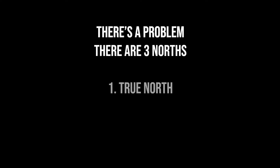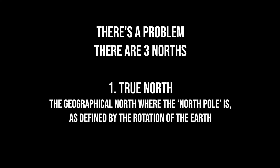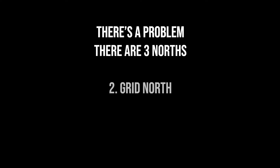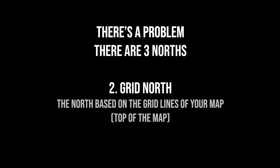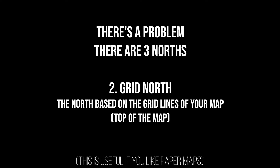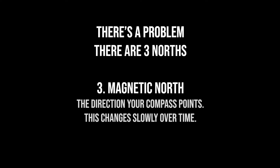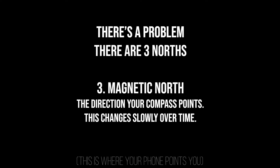The first north is true north, and this is the geographical north where the north pole is, defined by the rotation of the earth. Then there's a second north, and that's grid north — this is based on the grid lines of your map, so it's the top of the map. And finally, there's a third north, which is magnetic north. This is the direction your compass points, or your iPhone, or your Android phone.